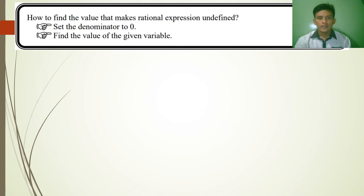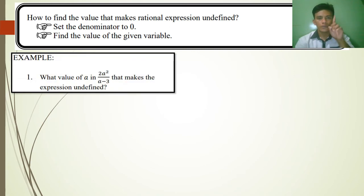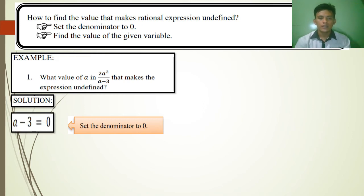How to find the value that makes a rational expression undefined. Step 1: Set the denominator to 0. Step 2: Find the value of the given variable. Example number 1: What value of A in 2A squared over A minus 3 makes the expression undefined? Step 1: Set the denominator to 0. Our denominator is A minus 3, so we set A minus 3 equal to 0.